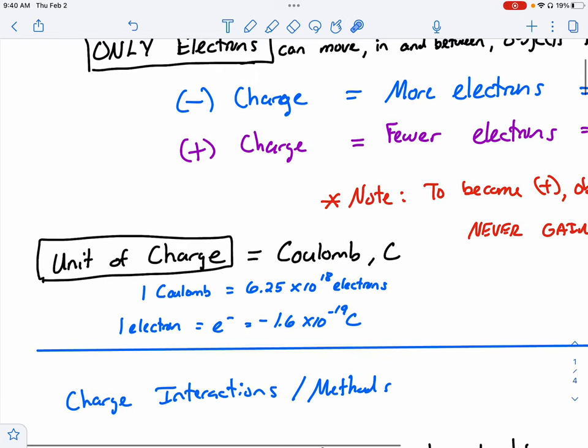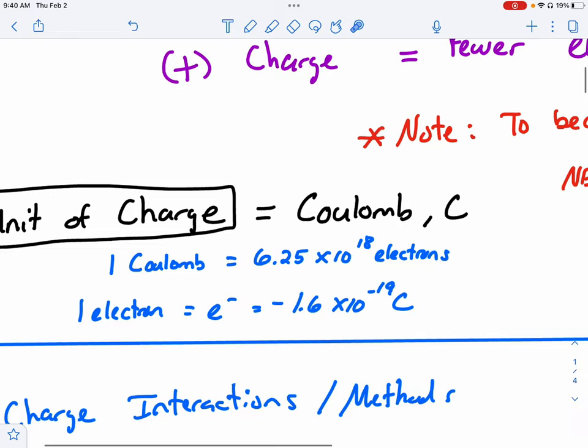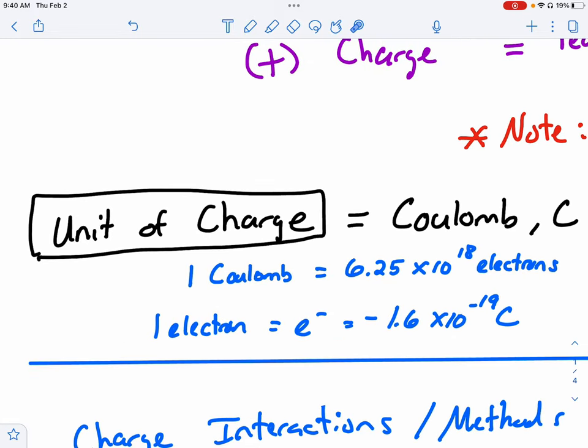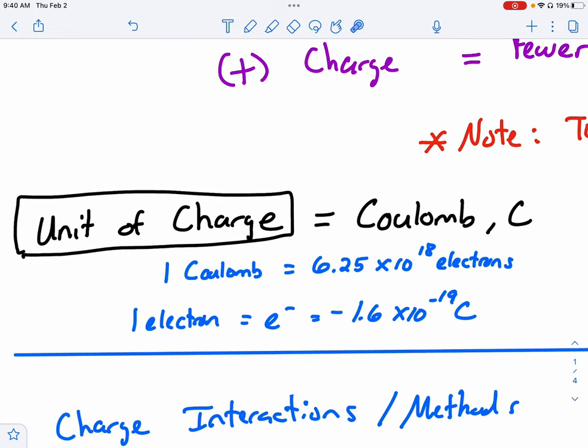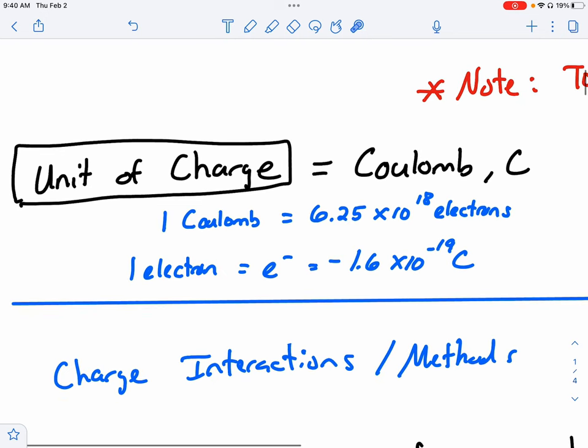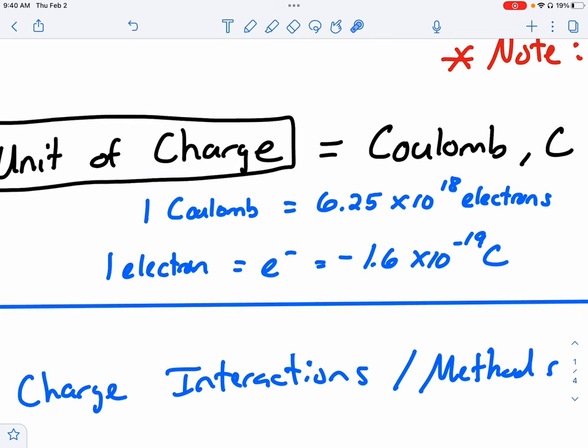Now the other thing that we're going to touch on, and I'm going to go over some basics, is this idea of charge. Charge has a unit. It's named after a scientist. It's called the coulomb. It's abbreviated by a capital C. And one coulomb is equal to 6.25 times 10 to the 18th electrons.